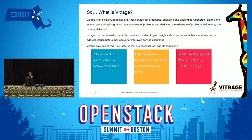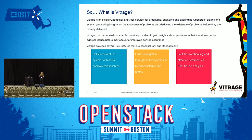Two years ago we recognized there is a gap in service providers' ability to understand their systems and the root cause of problems and faults — a fault management gap within OpenStack. That is how we started Vitrage, which became an official OpenStack project about a year ago, for analyzing OpenStack alarms and events. It enables service providers with huge networks comprised of many elements to understand exactly what is happening in their system and the propagation of faults.